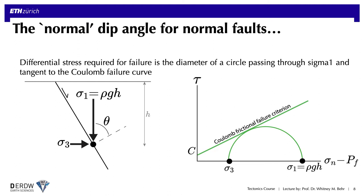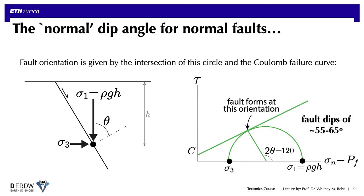If we want to know the ideal angle at which faults should form in this regime, we will simply draw a circle that intersects the Coulomb failure curve tangentially, and where the circle intersects the x-axis again will be the magnitude of sigma 1. The diameter of the circle is sigma 1 minus sigma 3, known as the differential stress. We can draw a line from the center of the circle to the tangential point between the circle and the Coulomb failure envelope, and this gives us the 2-theta angle, which is 120 degrees. The theta is the angle between the pole to the fault plane and sigma 1, which ultimately yields ideal normal fault dips on the order of 55 to 65 degrees — we normally just assume about 60 degrees is a typical fault dip based on Coulomb theory.